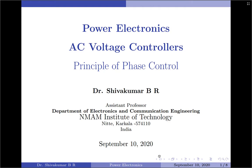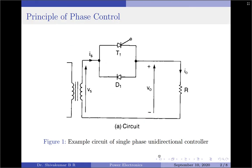Hello everyone, welcome to Power Electronics. In this session, I will be discussing the principle of phase control of AC voltage controllers. The principle of phase control can be explained using the single-phase unidirectional controller circuit shown in Figure 1. Note that the load is resistive. In this technique, the power flow to the load is controlled by delaying the firing angle or triggering angle of thyristor T1.